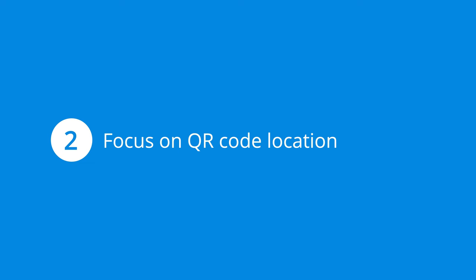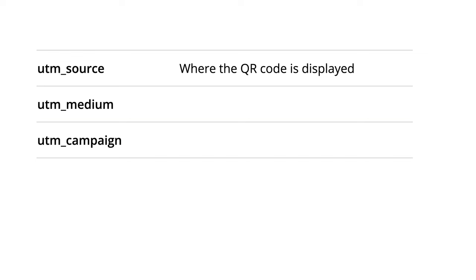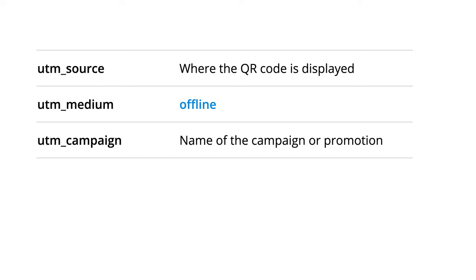Now let's look at the second option. This is where you focus on where the QR code is printed or displayed, so your reports will be more about the marketing initiative. You would set the UTM source based on where the QR code is displayed — for example, if the QR code is included in a newspaper ad, you would set the source to something like newspaper or the name of the newspaper. Or if you're printing the QR code in a brochure, you would set the source as brochure or the publication. The UTM medium would be set based on how the message is communicated — in a newspaper or brochure example, you would likely set the medium as offline. The UTM campaign tag would also be set to the overarching name of the campaign or promotion.